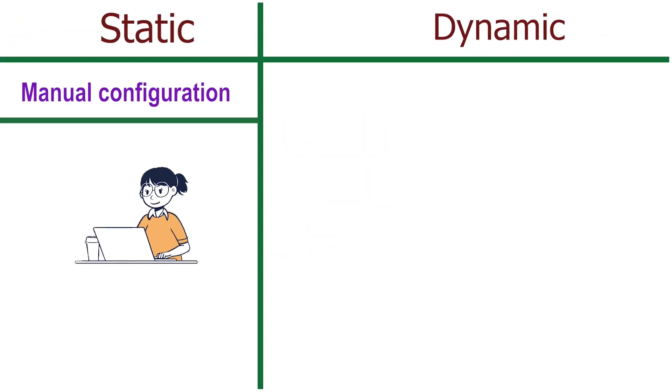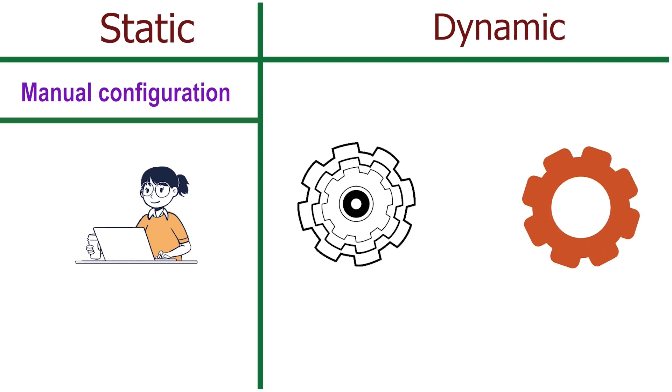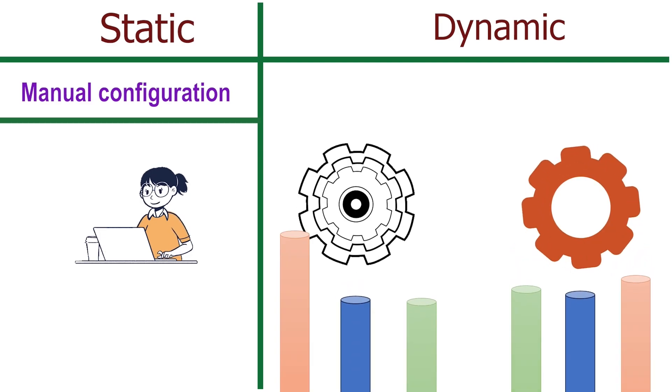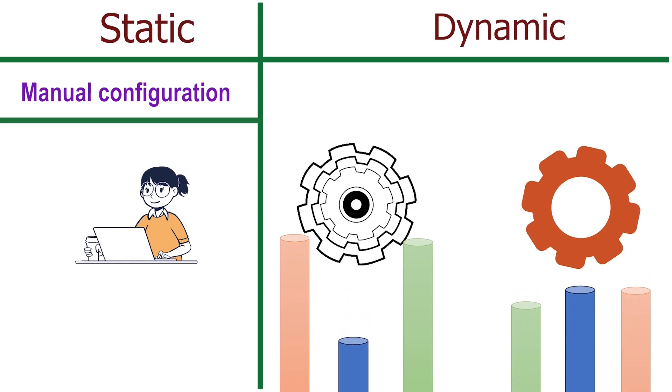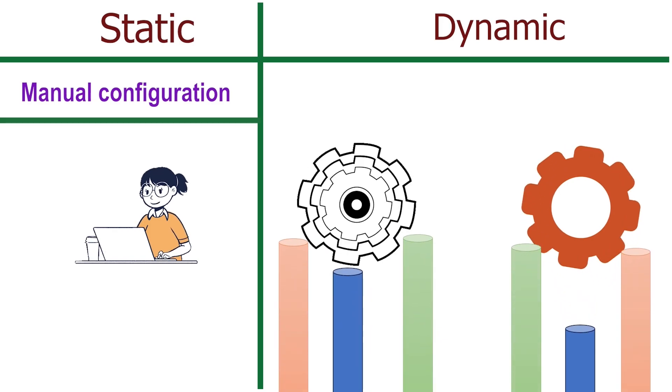There are two types of EtherChannels: static and dynamic. Static EtherChannel needs manual configuration. Dynamic EtherChannel uses an EtherChannel protocol, which dynamically adds and manages links in the EtherChannel.